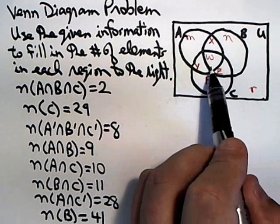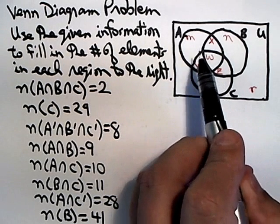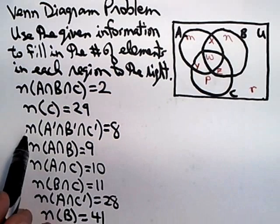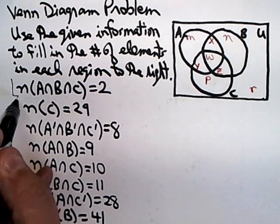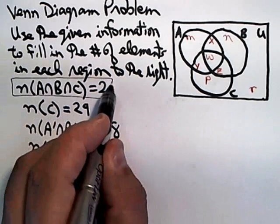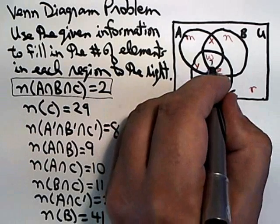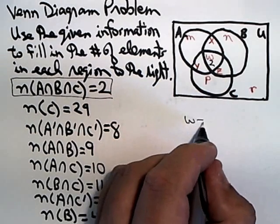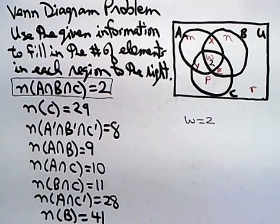And that innermost region here is the one labeled with the W. That's the overlap between A, B, and C. In other words, that's A intersect B intersect C. So we know that that value is 2. So what we've just shown is that the value of W is equal to 2.